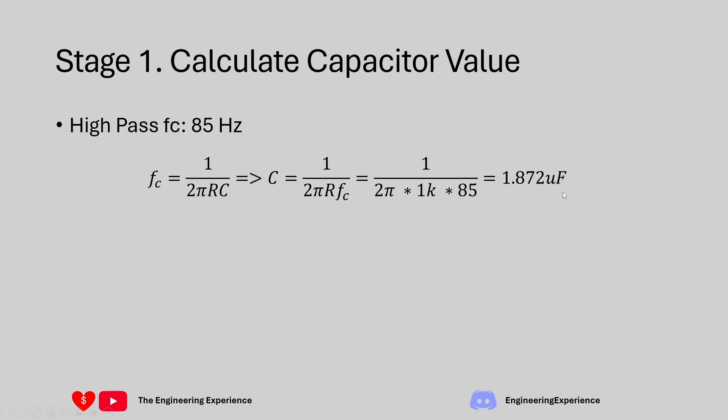This capacitance is not available in the real world. We can make it with a combination of capacitors. For this filter, we will set the capacitance to the closest value we can find, which is 2.2 µF, and then recalculate R to get the cutoff frequency that we want.